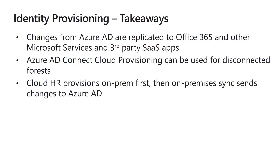To wrap up, some of the key takeaways for identity provisioning are: changes from Azure Active Directory are replicated to Office 365, other Microsoft services, and third-party SaaS apps. Azure AD Connect cloud provisioning can be used for disconnected forests. And last but not least, cloud HR provisions on-prem first, then Azure AD Connect sends changes back to Azure AD.